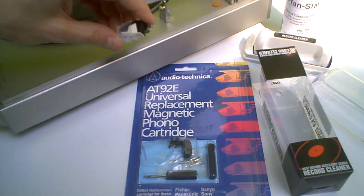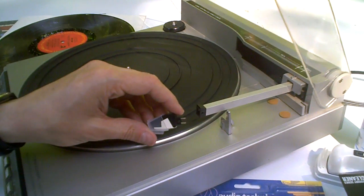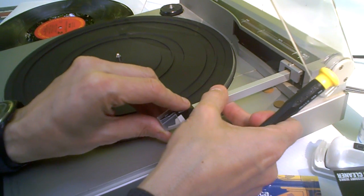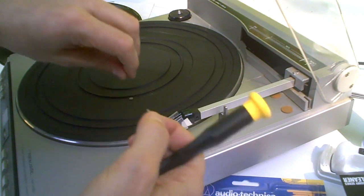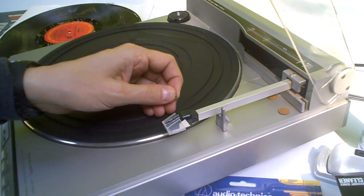We're going to replace it with a brand new Audio-Technica AT92E P-mount cartridge. That just plugs in there, just like you're plugging a cord into the wall. Super easy.